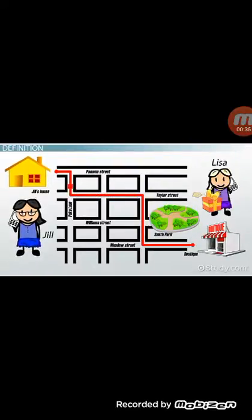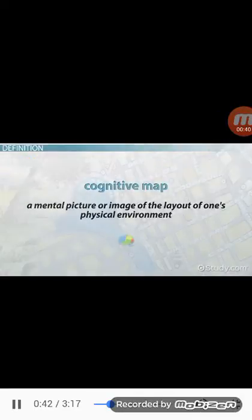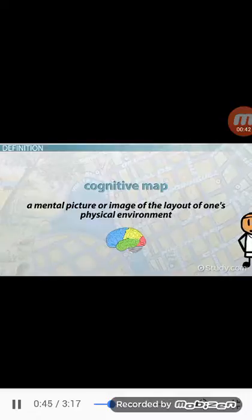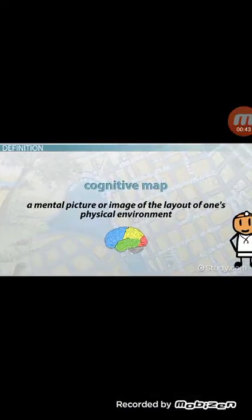But how was she able to do this? To answer this question, we must explore the concept of cognitive maps. A cognitive map is a mental picture or image of the layout of one's physical environment.